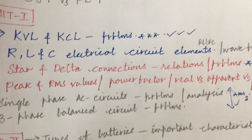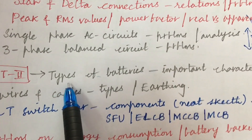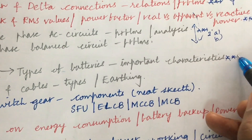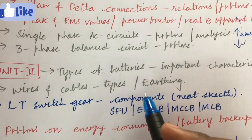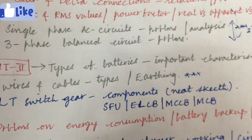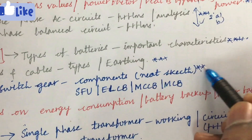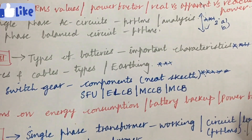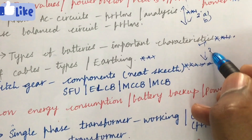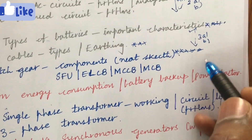Unit 2 is also very interesting and easy. Gunshot questions include: list out the various types of batteries and their important characteristics, and sometimes battery backup problems. Types of wires and cables and the importance of earthing may also be a question. LT switchgear, its components with a neat sketch, is also a very important gunshot question. From this part you will get one question for sure — 3A as well as 3B — including problems on energy consumption, battery backup, and power factor.